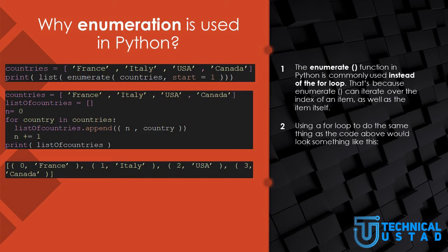That's why Enumerate is used in Python. The Enumerate function is commonly used instead of a regular for loop, because Enumerate can iterate over the index of an item as well as the item itself. Using Enumerate also makes the code cleaner, since you have to write fewer lines. For example, using the for loop to do the same thing would look something like this — declaring an array and then printing the list of countries with an index — but it is a lot longer, even though both display the same result.